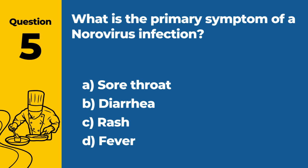Question 5: What is the primary symptom of a norovirus infection? A. Sore throat. B. Diarrhea. C. Rash. D. Fever. Answer: B. Diarrhea. The primary symptom of a norovirus infection is diarrhea, often accompanied by vomiting.